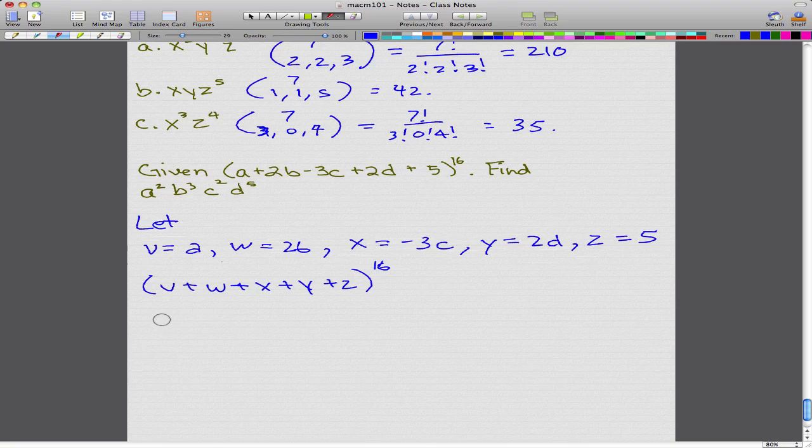Now let's find this with relation to these variables. So what we're actually finding is v², w³, x², y⁵, and z⁴. Now, where did I get z⁴?